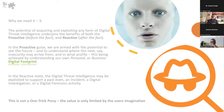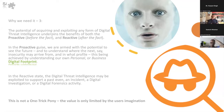In the reactive state, digital threat intelligence may be exploited to support a past event, an incident, a digital investigation, or a digital forensics activity. With expert witness work in courts, you tend to use open source intelligence to gather information about the site, the location, the entity, the asset, before actually presenting the evidence — it becomes a very intrinsic part of the value of the report. And this is not a one-trick pony — the value is really limited only by the imagination of the user.